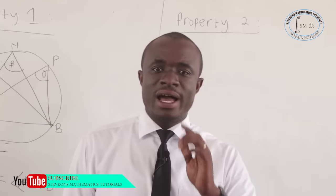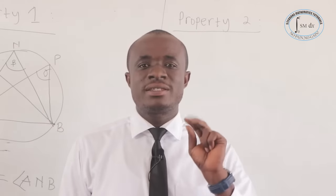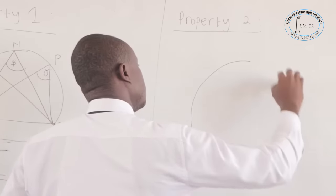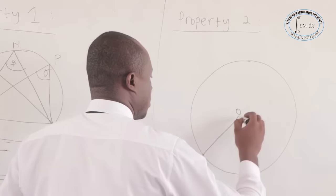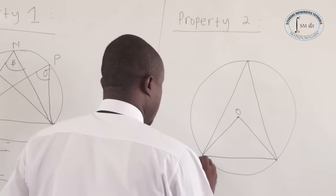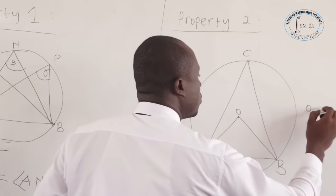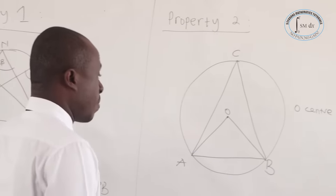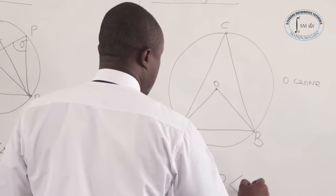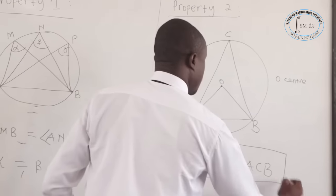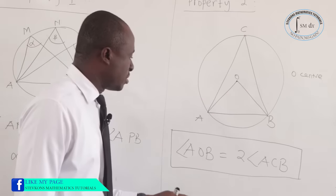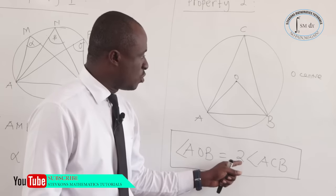Now the second property: the angle a chord subtends at the center is twice the angle a chord subtends at the circumference. Let's consider a circle with O as the center and points A, B, C. All that we are saying is that angle AOB is equal to 2 times angle ACB. The angle a chord subtends at the center is twice the angle the chord subtends at the circumference.